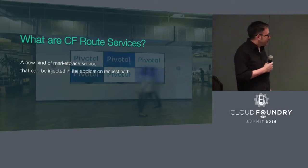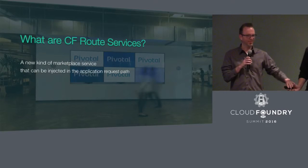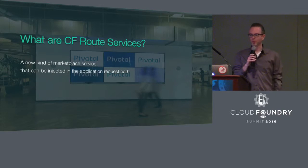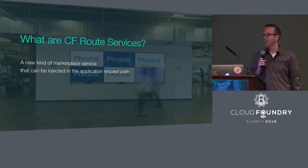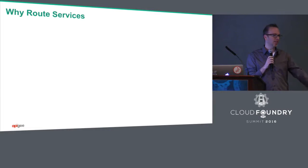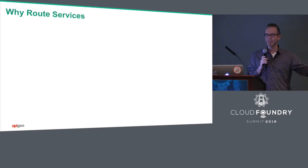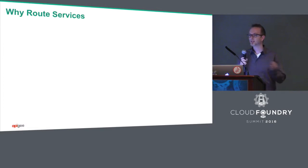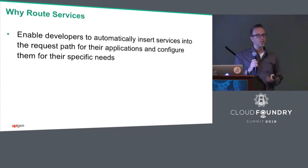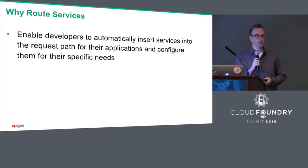I'm Richard Cerroder, I work at Pivotal. I'm a recovering vice president from somewhere else. I want to talk about route services and the importance of what we've built to help inject something into the route path. Route services make it possible to inject something into that request path — so it's not just traffic coming into the system, but being able to do things with it along the way. This gives a cool opportunity for marketplace services, not just things you buy from Apigee, but even user-defined things.